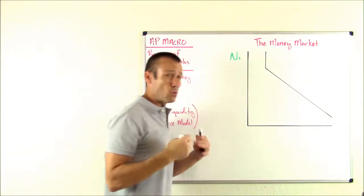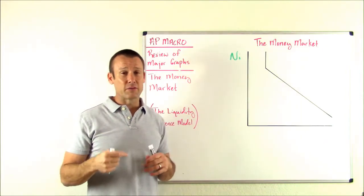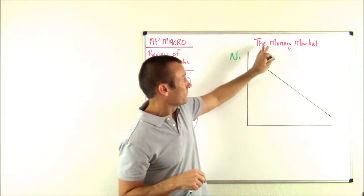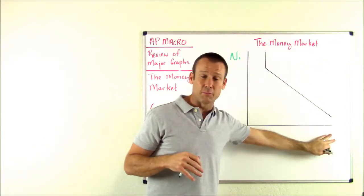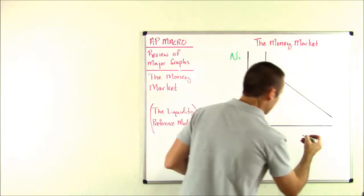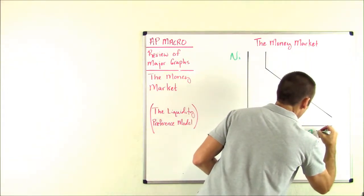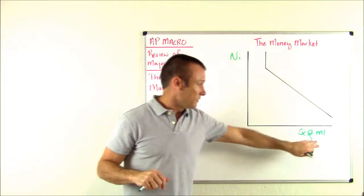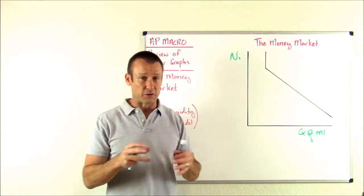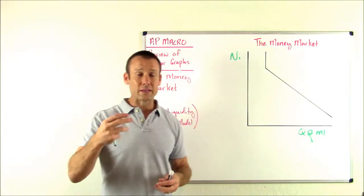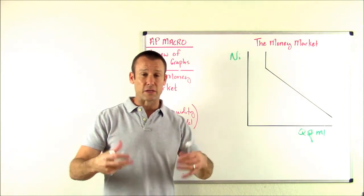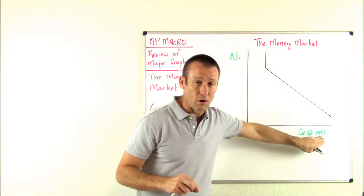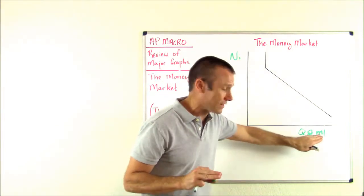On the horizontal axis we put the quantity of money. I like to put quantity of M1. M1 is money — it's an aggregate measurement of the money supply, the narrowest measurement, and what it includes are truly liquid assets: currency and what you've got in your checking account. So quantity of M1 is the same thing as quantity of money.